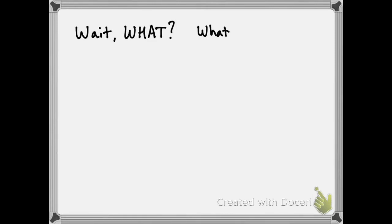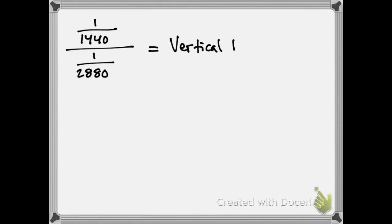Now you're thinking, what am I talking about? What's this complicated fraction mean, anyway? 1 over 1,440 divided by 1 over 2,880 is, in this case, the vertical exaggeration of the topographic profile.